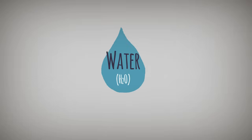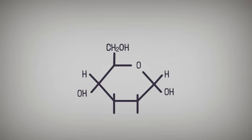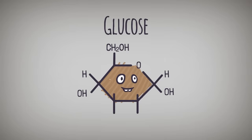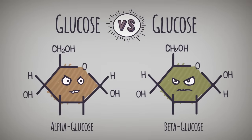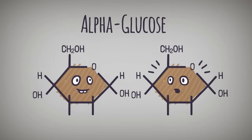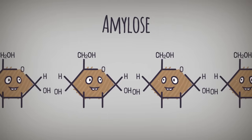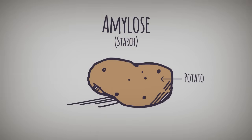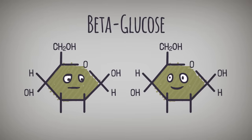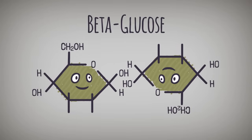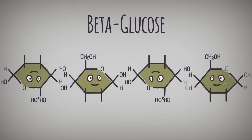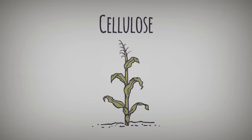How they connect matters greatly. For example, let's compare glucose to glucose. Even though they contain the same elements — carbon, hydrogen, and oxygen — alpha glucose and beta glucose bond differently. Alpha glucose bonds in a straight line and forms amylose, or starch, as found in potatoes. Whereas beta glucose has to rotate 180 degrees so it can bond and form a strong complex structure called cellulose, as found in corn stalks and tree trunks.